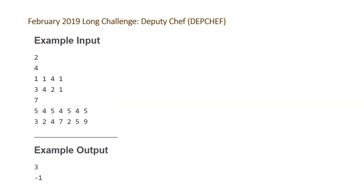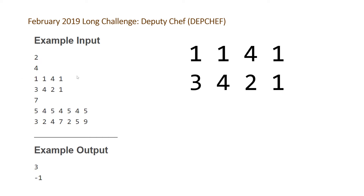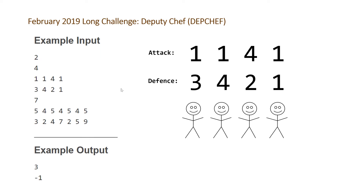Here are the two examples that CodeChef provides us with. The first number is t, the number of test cases. The next number for each test case is n, the number of soldiers, and then we have some numbers a and some numbers d that represent the attack and defense of each of our n soldiers. If we zoom in on the first example with four soldiers, the first line represents the attack values and the second line represents the defense values for each of our four soldiers.